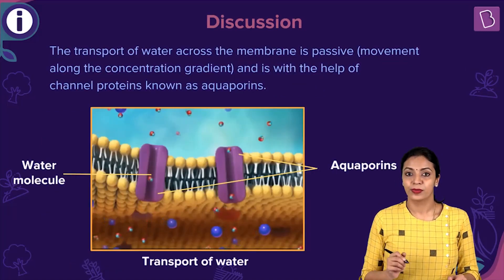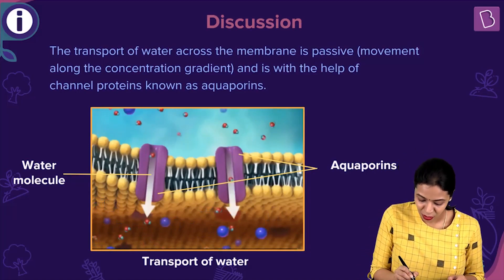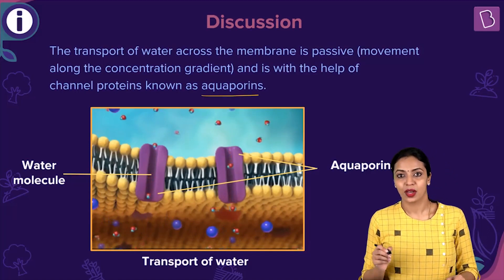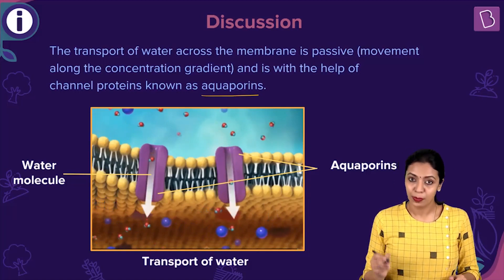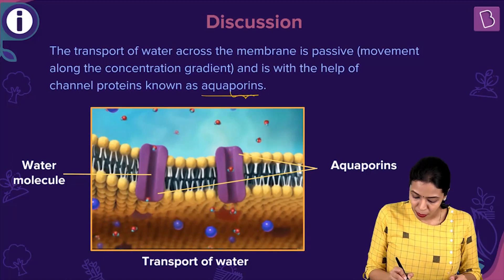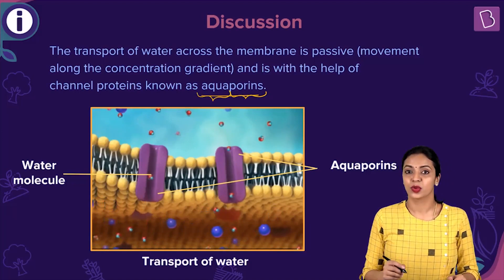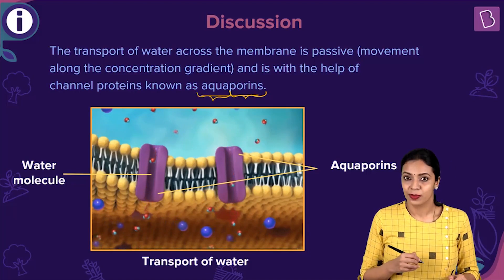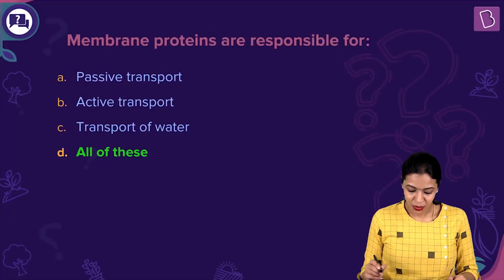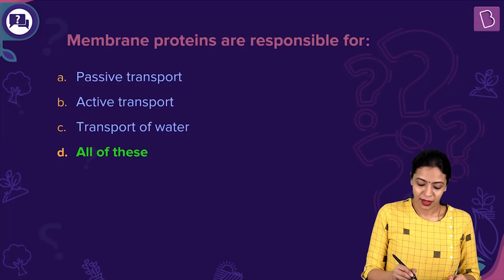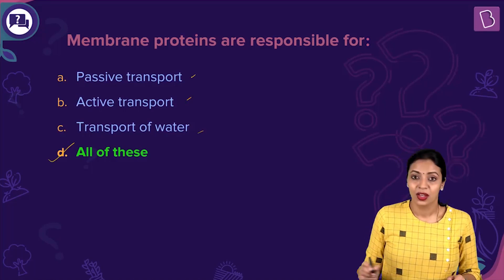Transport of water across the membrane also happens with the help of proteins known as aquaporins. Aquaporins are a type of channel protein involved in facilitated diffusion; as the name suggests, they form pores in the membrane to transport water. So in transport of water there is also involvement of membrane proteins — aquaporins. Therefore, membrane proteins are responsible for active transport, passive transport, and transport of water. The correct answer is option D, all of these.